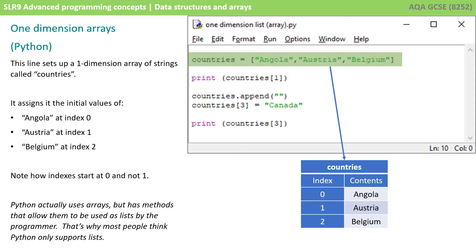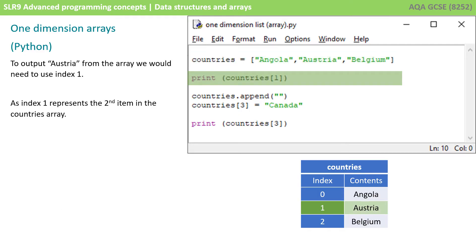So, here in this code example, this line sets up a one-dimensional array of strings called countries. It assigns it some initial values, Angola at index 0, Austria at index 1, and Belgium at index 2. And again, note how the indexes typically start at 0 and not 1. To output Austria from the array, we would therefore need to use index 1, as index 1 represents the second item in our countries array.